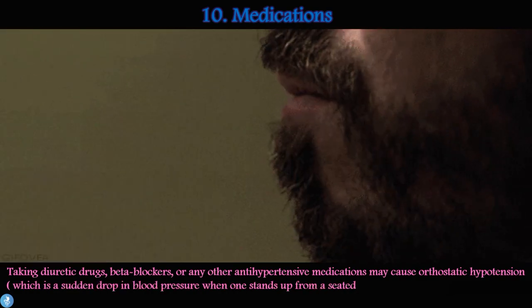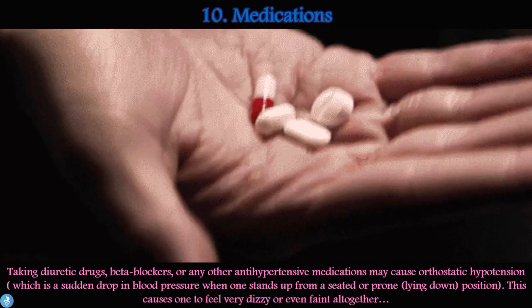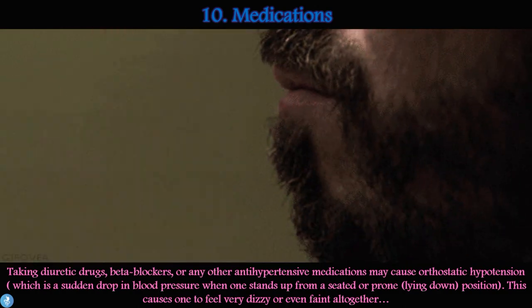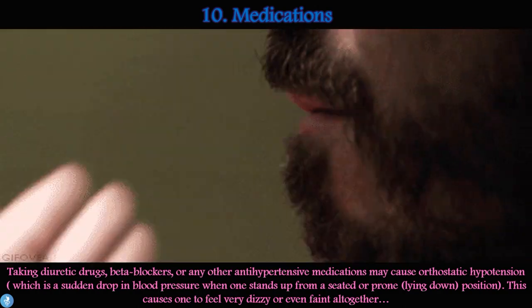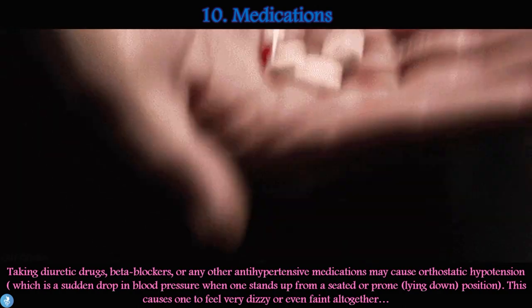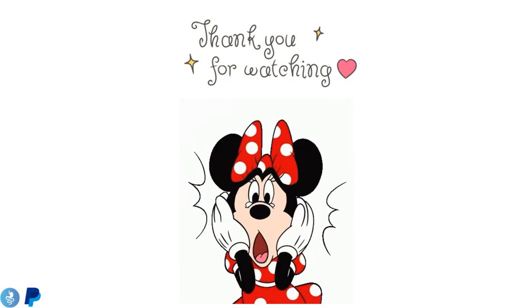And finally, number ten is medications. Taking diuretic drugs, beta blockers, or any other antihypertensive medications may cause something called orthostatic hypotension, which is a sudden drop in blood pressure when one stands up from a seated or prone — that is, laying down — position. This causes one to feel very dizzy and even to faint altogether.